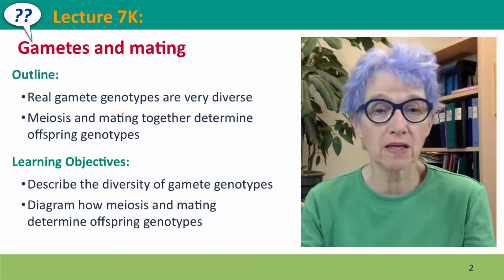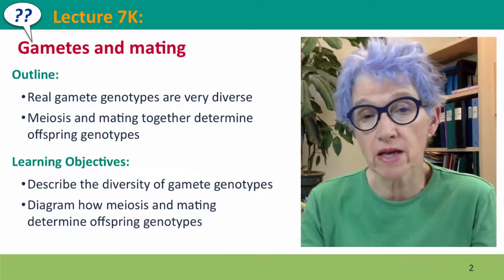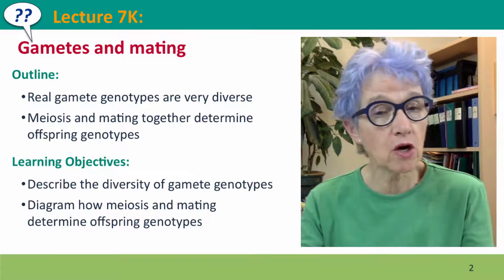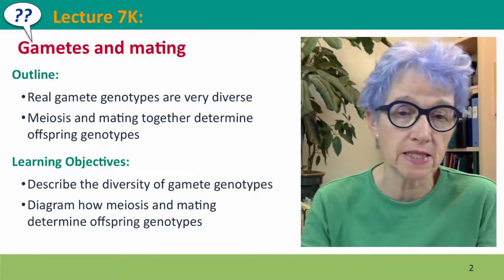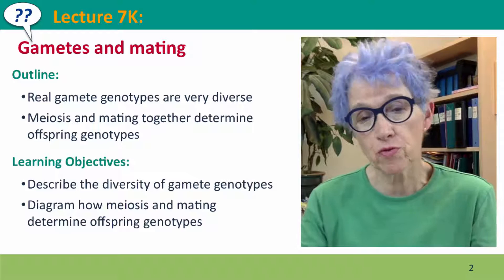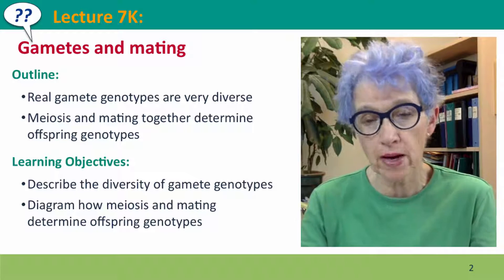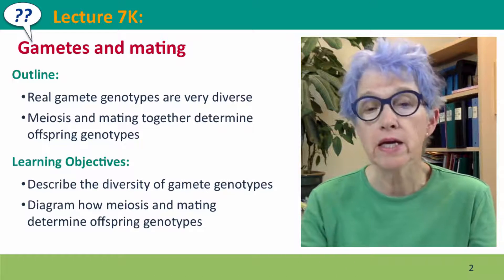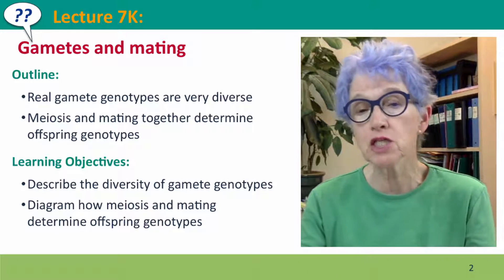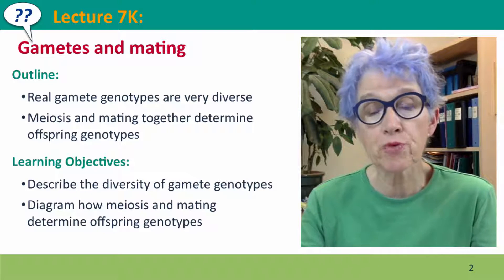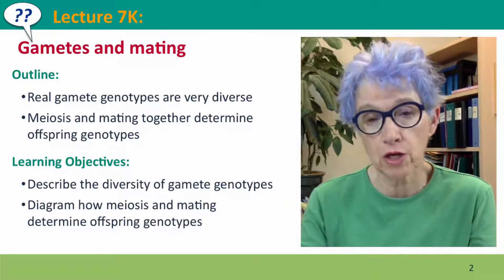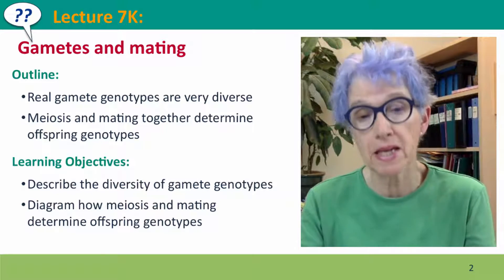Hi, everyone. Welcome back to Lecture 7 of Useful Genetics, where we're going to talk about the diversity of gametes and how to think about the roles of meiosis and mating together in producing the offspring. This is a precursor to a detailed analysis of how to think about mating.